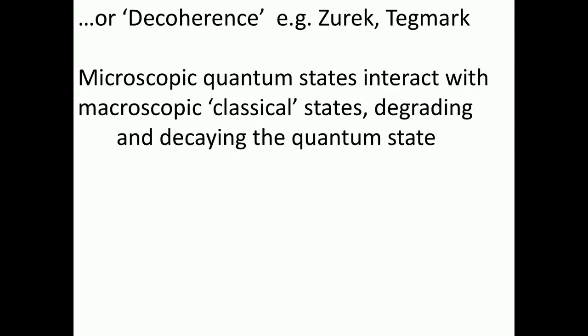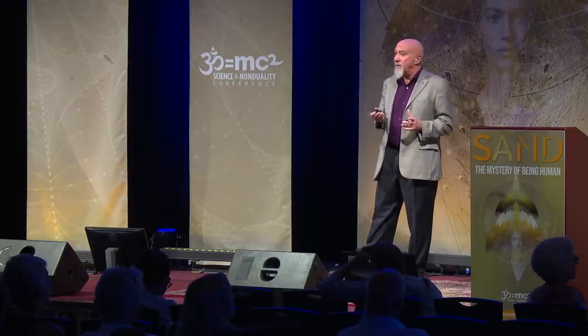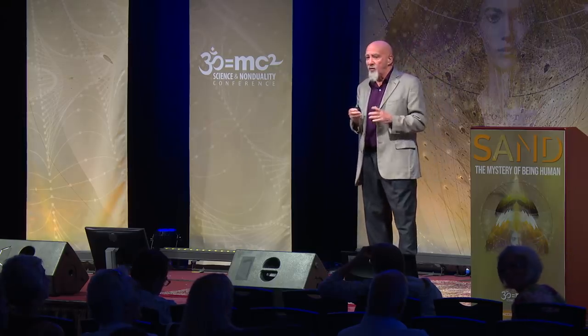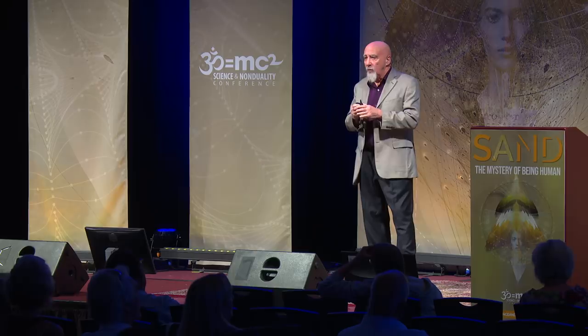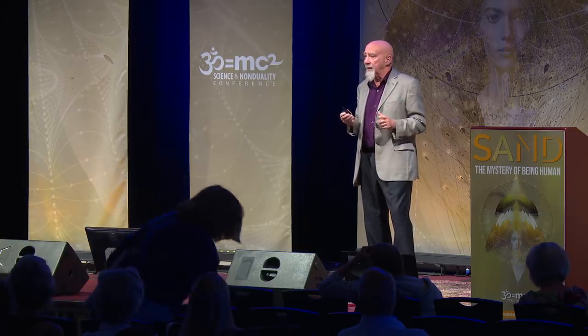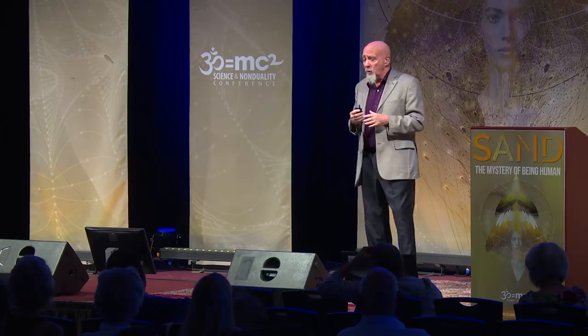And there's also decoherence. This was bandied about as a solution to the measurement, to quantum superpositions put forth by Zurich and Tegmark and many others. The idea there is that microscopic quantum states interact with macroscopic classical states. They meet the environment, and this degrades and decays the quantum state. The problem with that is that at microscopic levels, everything is quantum, and decoherence actually involves spreading or extension of quantum states. So the quantum state just grows. There's just an article in The Atlantic, an excerpt from a book by Philip Ball, who claims that the quantum state just grows and somehow we're fooled into thinking it's collapsing. So this doesn't really explain the loss of superposition. It's a fallback position.